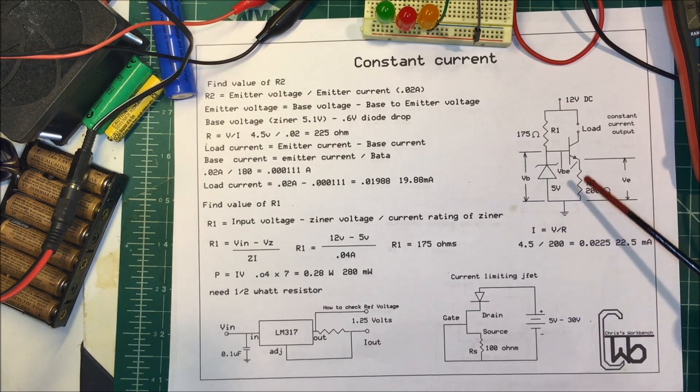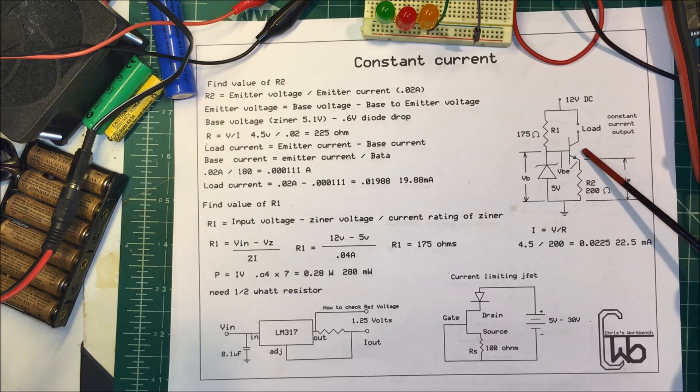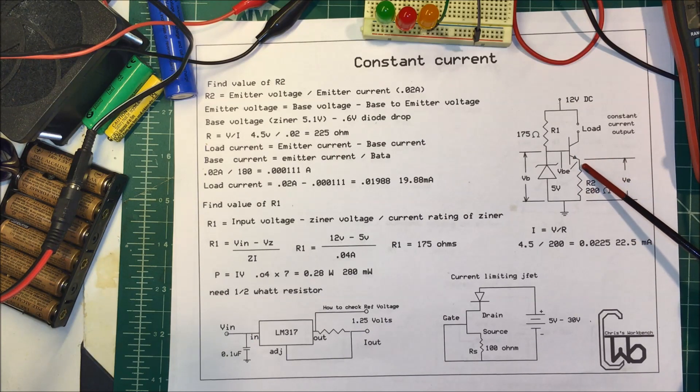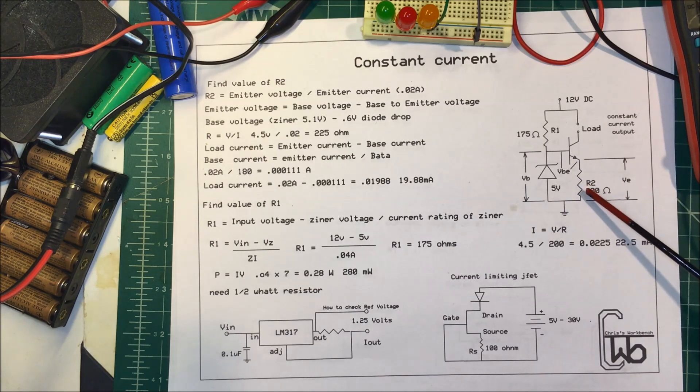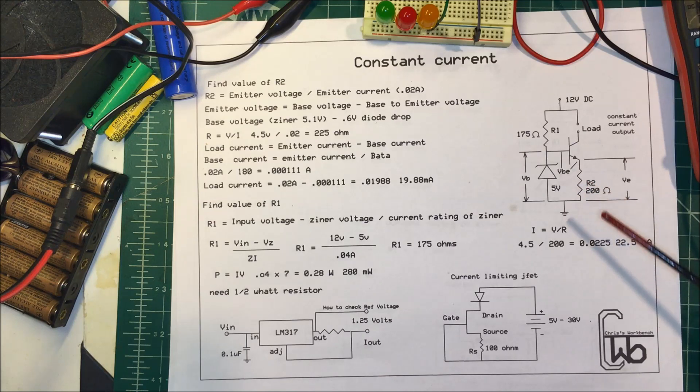Let's talk about constant current. We're going to make a constant current source using a transistor - this happens to be a 2N2222. What we want to do is have a known voltage from the emitter to ground through a known resistance, and that's going to give us a current.